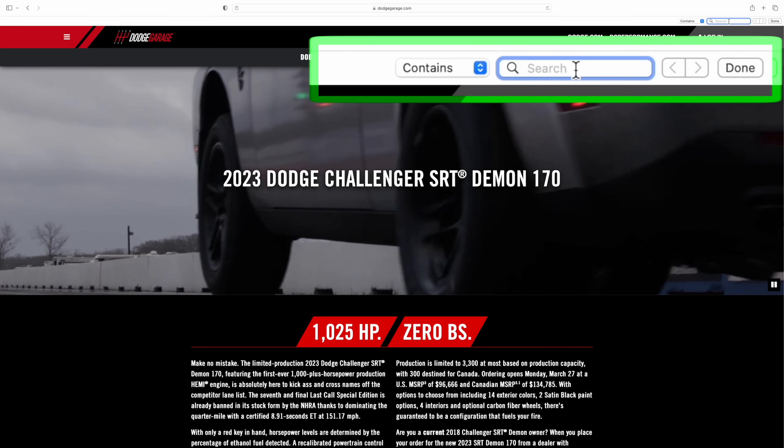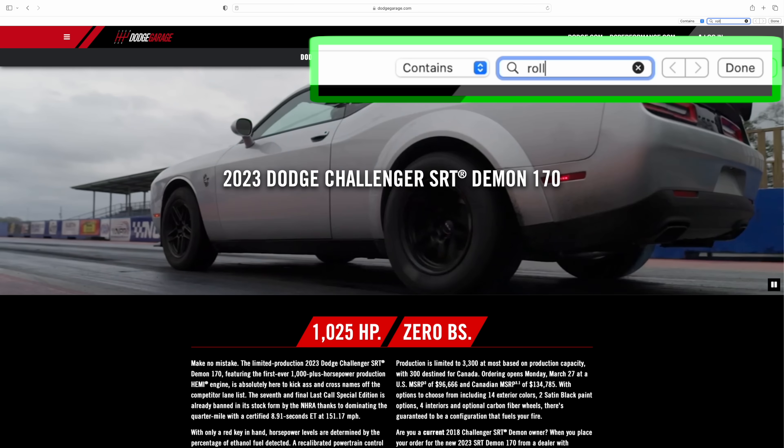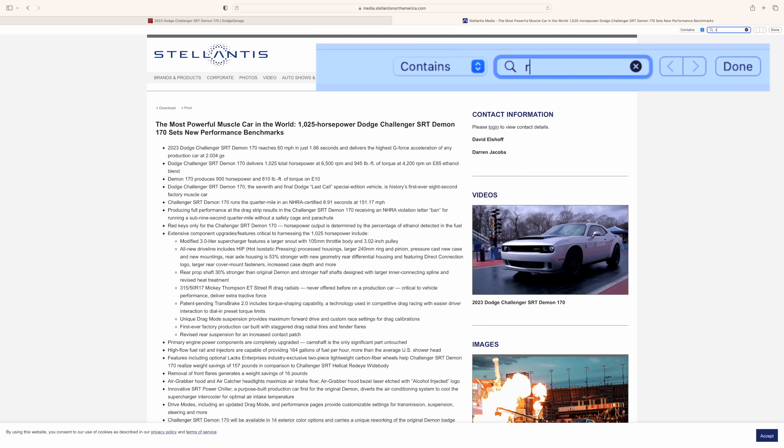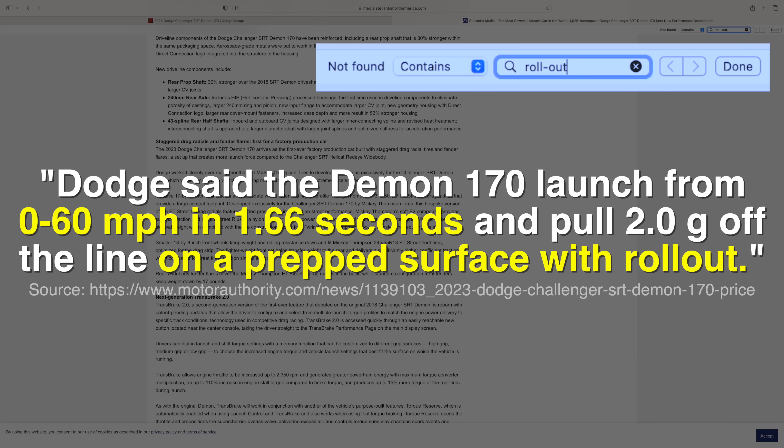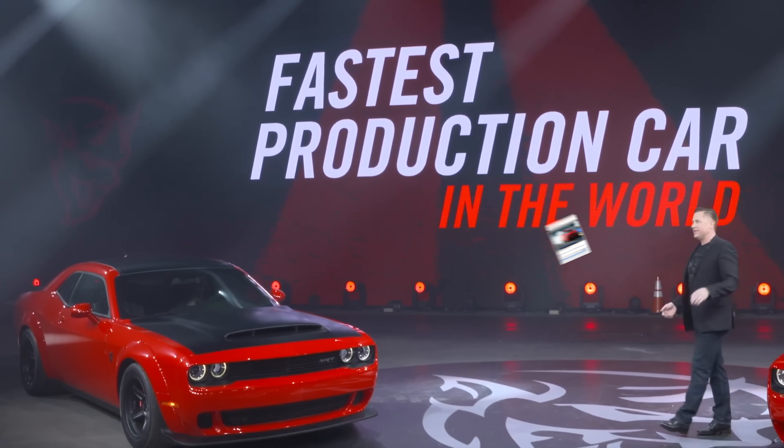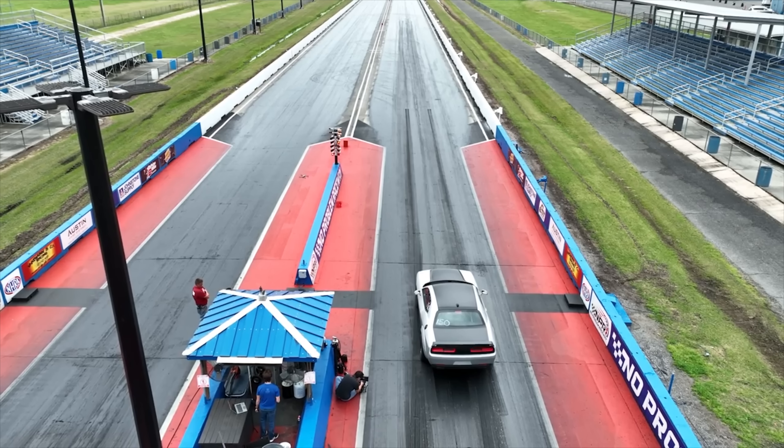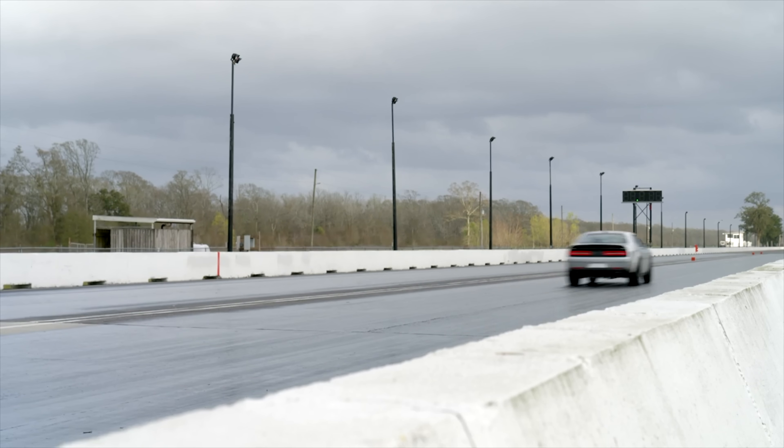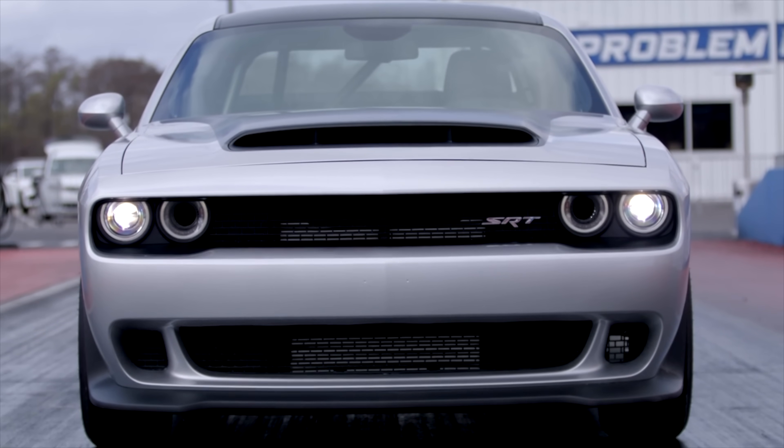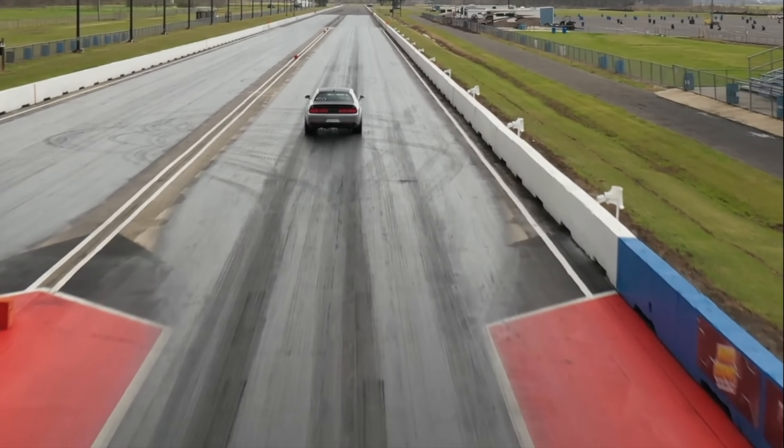But six years later, you cannot even find the word rollout mentioned once on the public demon page or on the media page. They admit it only when you ask, and they won't provide the number without rollout. The current CEO of Dodge has been quoted saying rollout isn't fair, and yet they won't even tell us what the number is. Incredible.